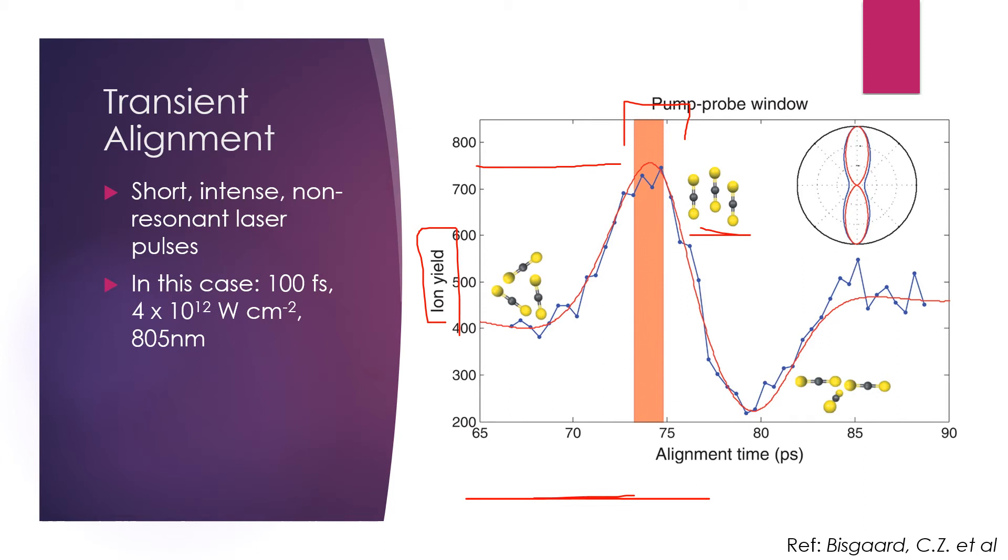This transient alignment creates this roughly one picosecond window, where the molecules are aligned in the same direction, during which we can make measurements in the molecular frame. A one picosecond window is not really a long time, but it is enough for our purposes here. The carbon disulfide photodissociation reaction takes less than one picosecond to fully complete.